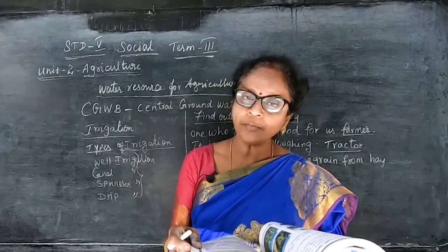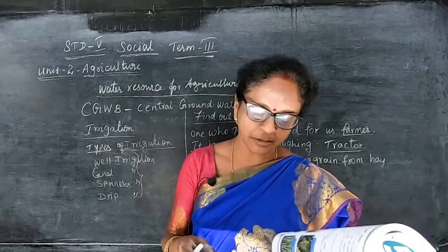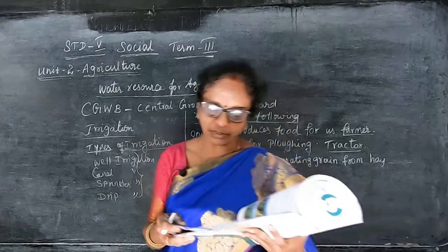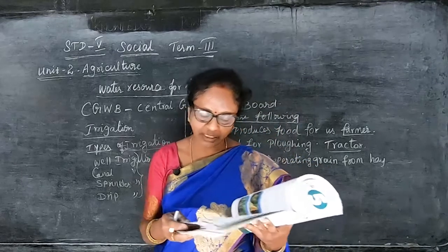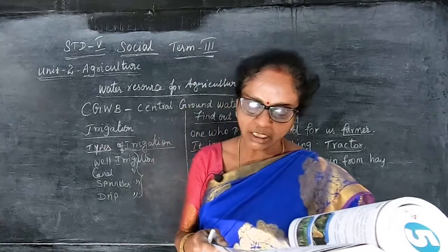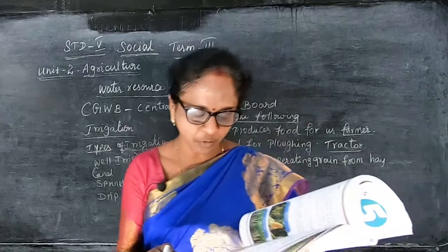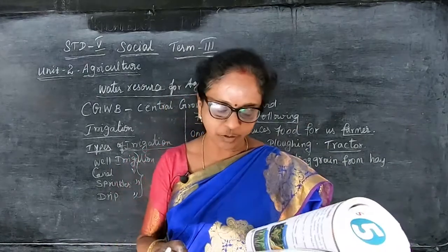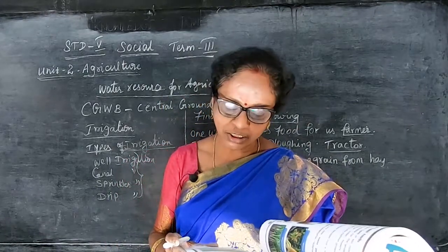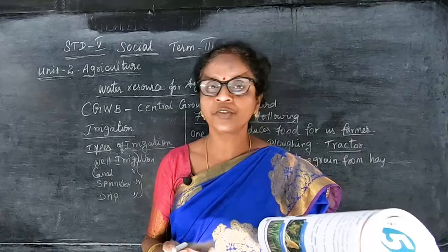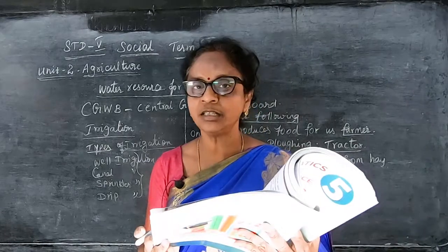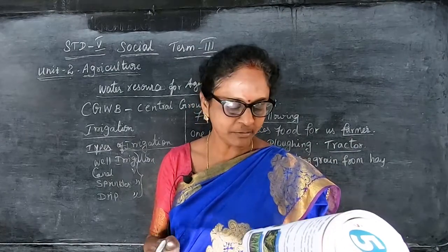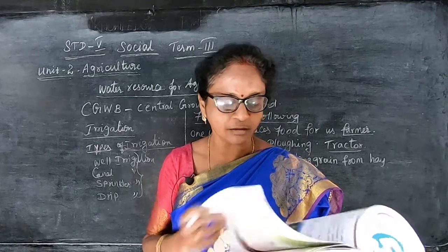Cropping seasons in Tamil Nadu are: Navarai, Kuruvai, Sornavari, Sambha, Kar, and Thaladi. Coimbatore is the largest cotton-producing district in Tamil Nadu and is also known as the Manchester of South India.